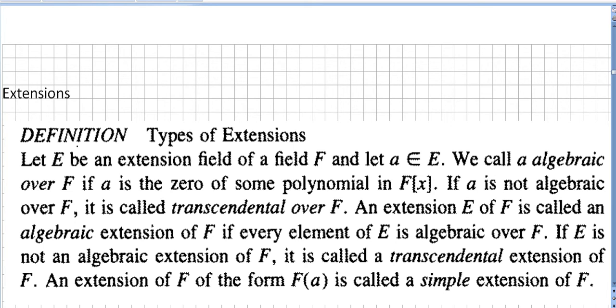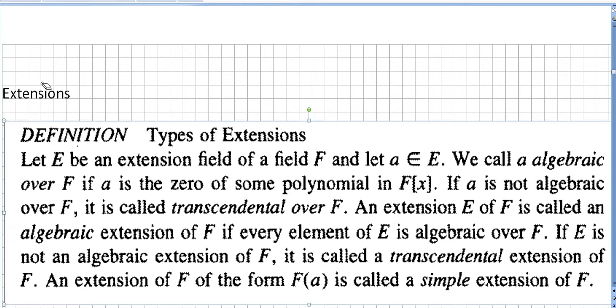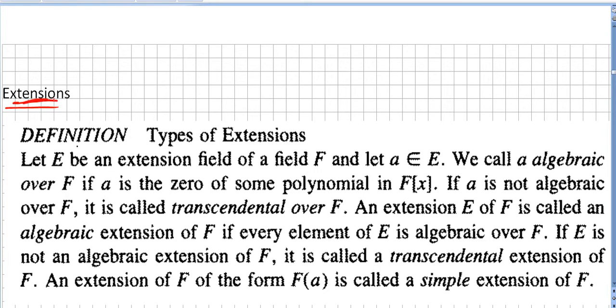In this video we begin the chapter on extensions. We begin with a definition of types of extensions. Let E be an extension field of the field F and let a be in E. So we have a field E and a field F, where E is an extension field of F.